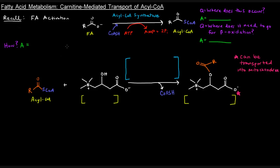Previously we've talked about fatty acid metabolism and how we can break these fatty acids down for energy. Before we did that, we actually have to activate fatty acids to their activated form called acyl-CoA. The enzyme that did that was called acyl-CoA synthetase, and we added a coenzyme A, which required two ATP equivalents. We talked about that in the previous video. This activation occurs in the cytosol of a cell. These acyl-CoAs are broken down via beta-oxidation, and we know that beta-oxidation occurs in the mitochondrial matrix.